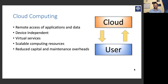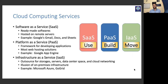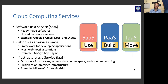With cloud computing, there are three basic services. These are Software as a Service (SaaS), Platform as a Service (PaaS), and Infrastructure as a Service (IaaS). Software as a Service is basically for availing applications directly — it is web-driven delivery of services utilizing the internet. Examples include Google, Gmail, Docs, and Sheets.